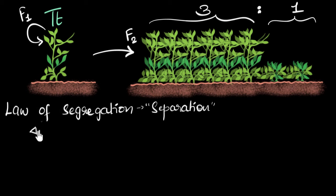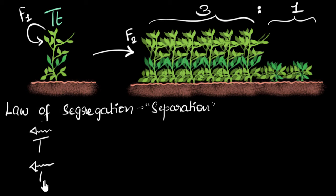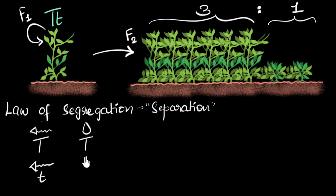Imagine the sperms found inside the pollen grains. When those sperms are formed, some sperms will get a tall trait and some sperms will get a short trait — that's what he means by separation. The traits get separated when these sperm cells are formed. Similarly, when the egg cells are formed inside the ovary, some egg cells will get the tall trait and some egg cells will get the short trait.